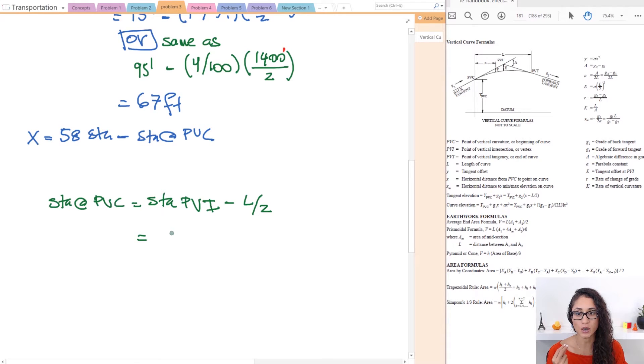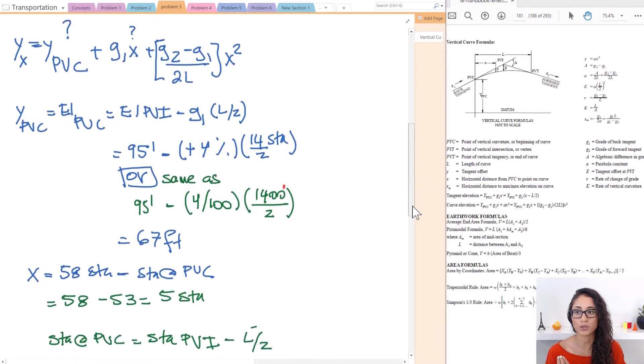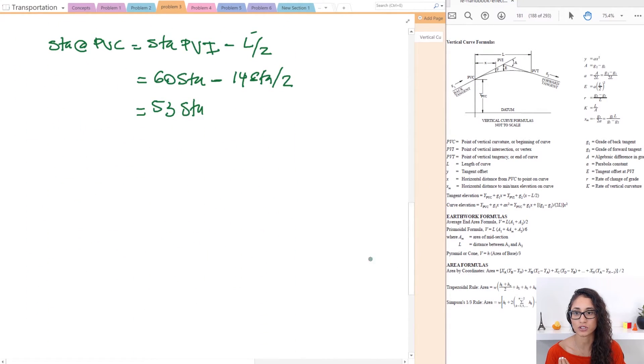Okay so the station at PVI was given as 60. So we have 60 station minus L which is 14 station divided by 2. So if you plug in this you will get an answer of 53 station. Now we can go back here and do 58 minus 53 and this gives you 5 station. So we found X, we found the elevation at PVC. All we gotta do now is plug in the answers in the equation.